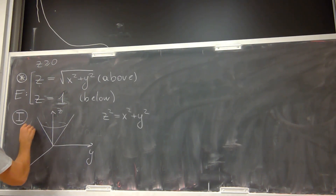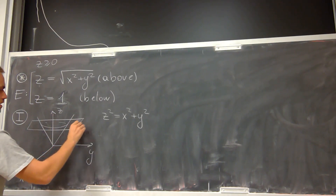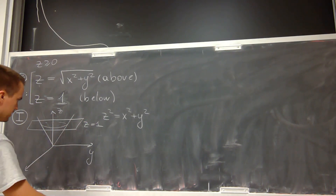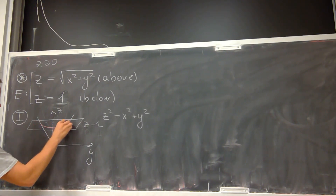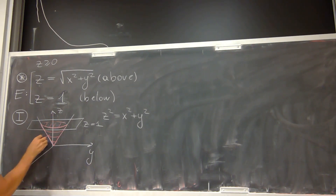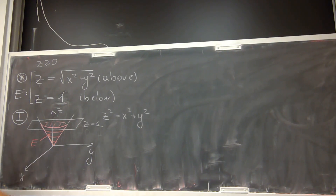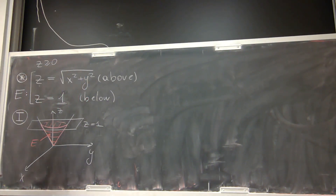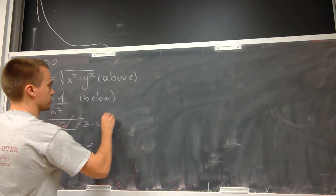I also have the plane z equals 1. My region E is going to be this cone bounded above by the plane z equals 1, and I want to find the volume of this region E.